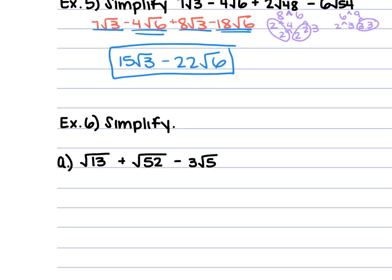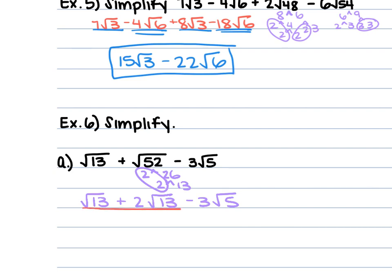For example 6, we have the square root of 6 plus the square root of 52 minus 3 square root of 5. The 52 is 2 times 26, and 26 is 2 times 13 — we get two 2's. So we can rewrite this as square root of 13 plus 2 square root of 13 minus 3 square root of 5. The square root of 13 and 2 square root of 13 are like terms: 1 plus 2 is 3 square root of 13 minus 3 square root of 5.